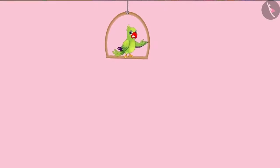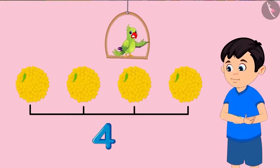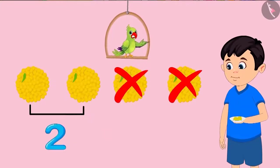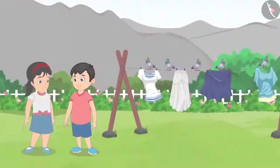So, children, first Chotu had four laddus with him. Then he ate one, so there were three left. But then, out of the three laddus, he ate one more laddu. So then there were just two laddus left with him. In this way, the number of laddus kept decreasing.